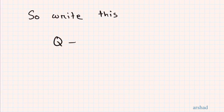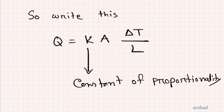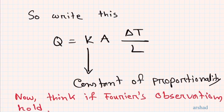To create an equation, we remove the proportionality sign and introduce a constant K, writing Q = K·A·ΔT / L. This K is called the constant of proportionality, or thermal conductivity. Since K can be any positive value other than zero, if you increase A or ΔT, heat transfer increases, and if you increase L, heat transfer decreases — Fourier's observations still hold.